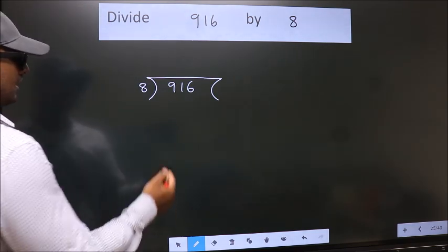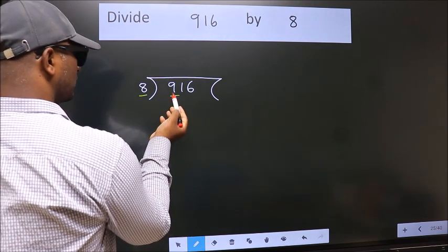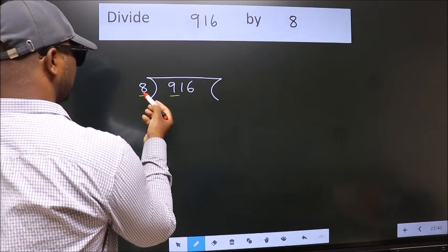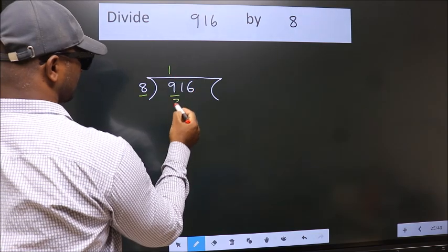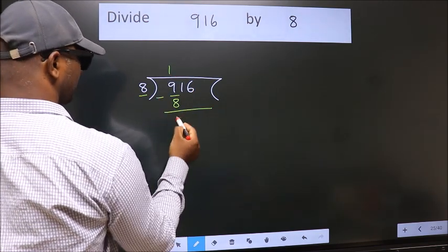Next, here we have 9, here 8. A number close to 9 in the 8 table is 8 once 8. Now we should subtract. We get 1.